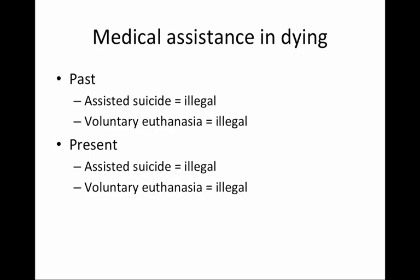Until very recently, assisted suicide was very clearly illegal in Canada—it was an offence under the Canadian Criminal Code. Euthanasia was also clearly illegal in Canada—it was murder under the Criminal Code. However, both assisted suicide and voluntary euthanasia are now clearly legal throughout Canada under the umbrella term of medical assistance in dying.